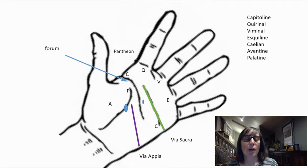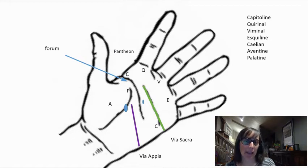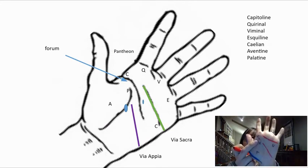Right, and then now that we've got the hills, we can put in a little bit of the city of Rome. I'm going to use another color. Again, if you have one color, that's fine. But the forum is in between the C and the P, the Capitoline and the Palatine. Okay, so that's the forum right there, this little red dot.